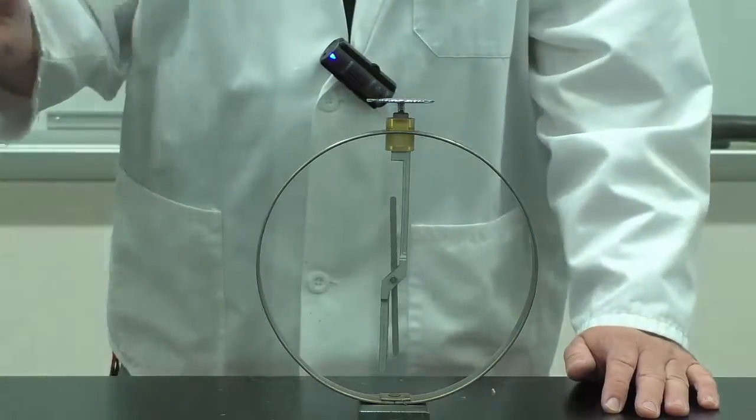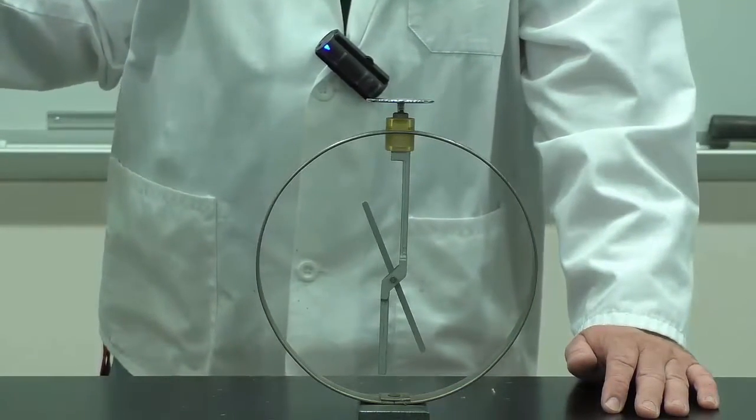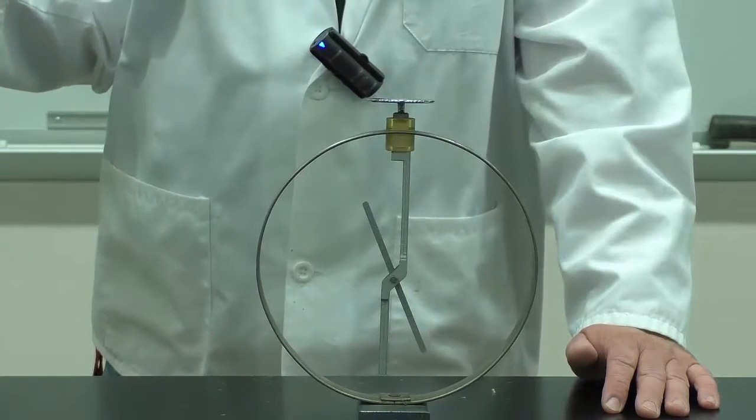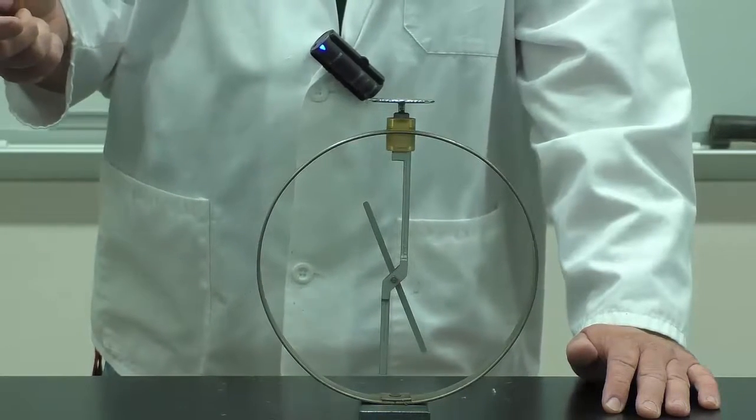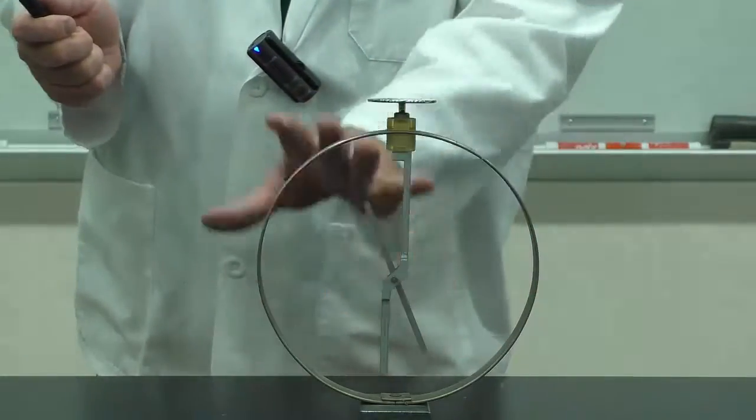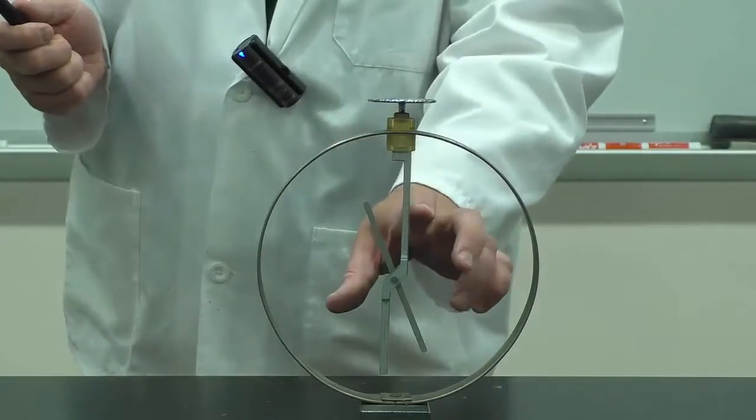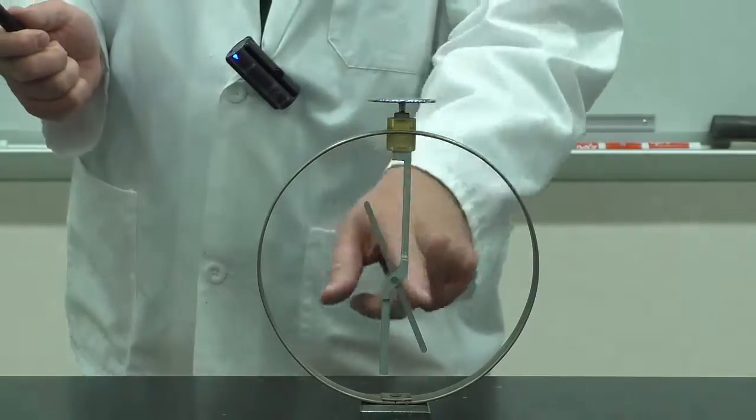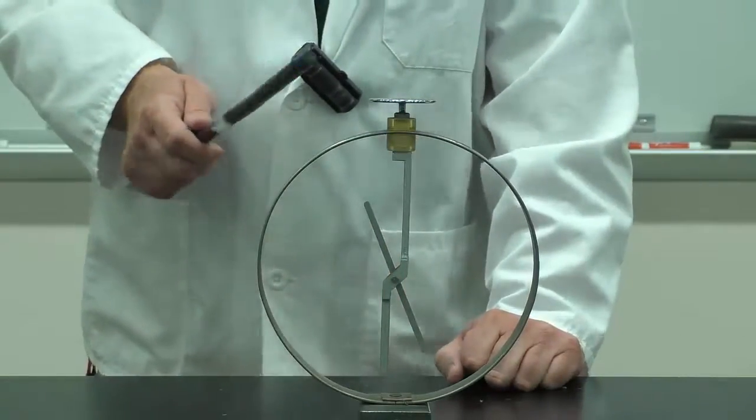When I bring the rod away, because the electroscope wasn't induced with a positive charge, it now has a positive charge throughout the whole electroscope and so it's spreading out everywhere and those positive charges are all repelling each other.